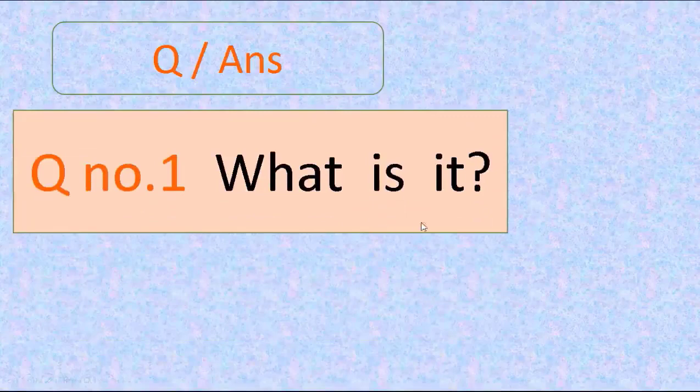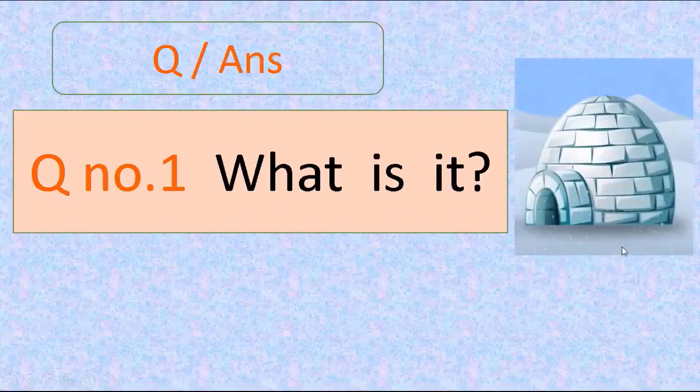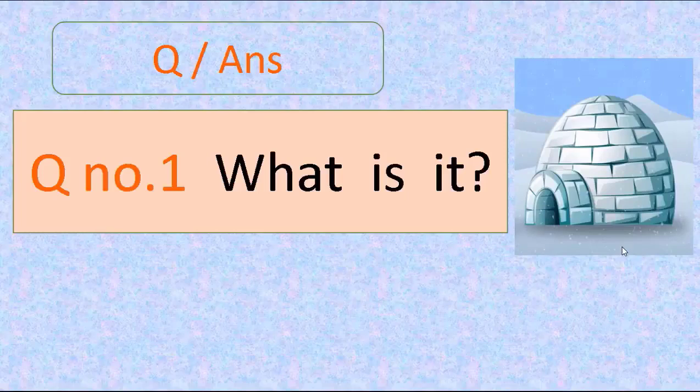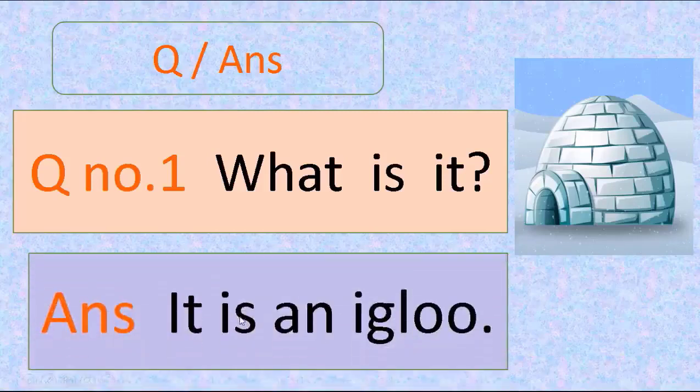What is it? What is it? Igloo. So you see, this igloo word, does it start with consonant letter or vowel letter? Yes, you are right. It starts with I and it's a vowel. So our answer is: it is an igloo. It is an igloo.